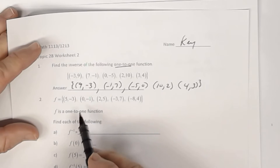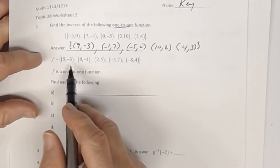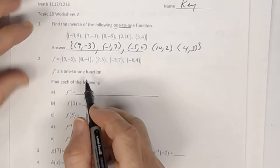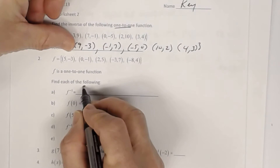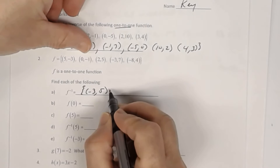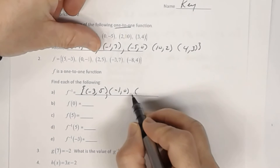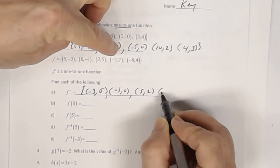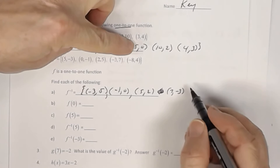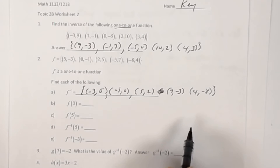In number 2, again you're given a function, told it's one-to-one, and you want to find the inverse. To find the inverse, since it's one-to-one, you just interchange the coordinates. So (5, -3) becomes (-3, 5); (0, -1) becomes (-1, 0); (2, 5) becomes (5, 2); (-3, 7) becomes (7, -3); and (-8, 4) becomes (4, -8). All you do is interchange the coordinates.